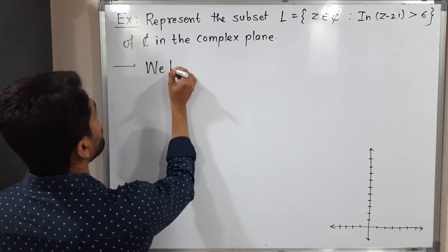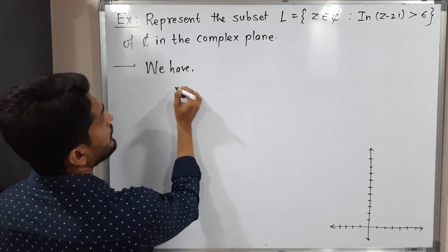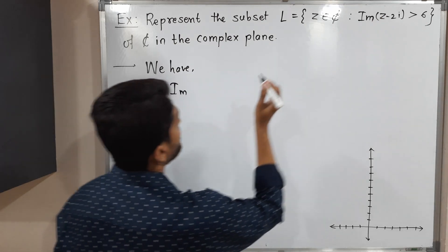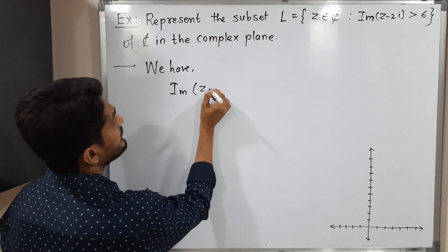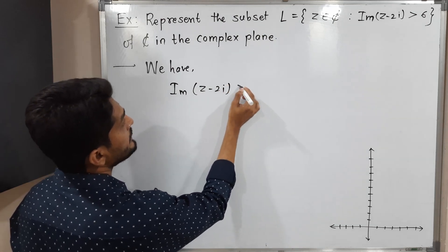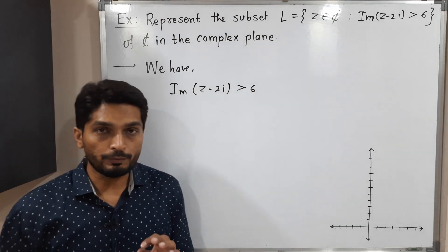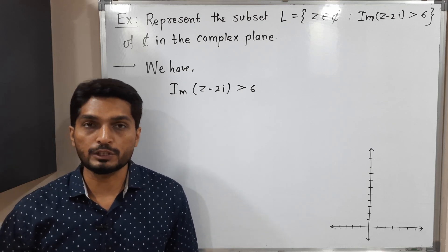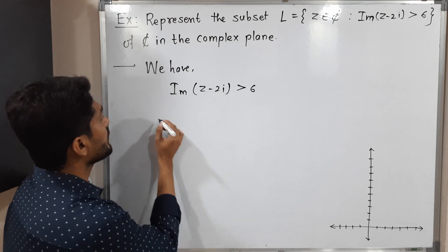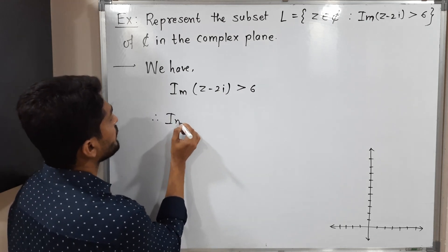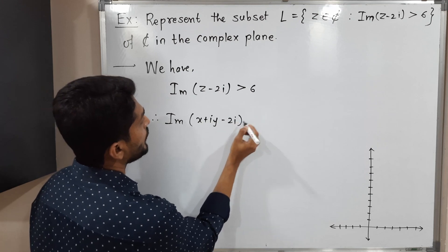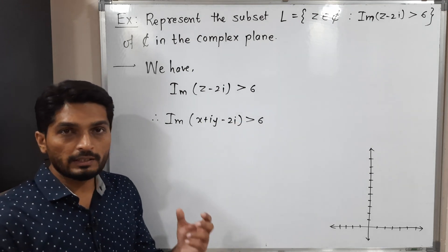We have imaginary part of z minus 2i is strictly greater than 6. What we do in this case is replace z by its Cartesian form which is x plus iy. Therefore imaginary part of x plus iy minus 2i greater than 6.